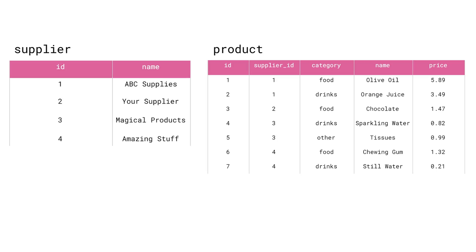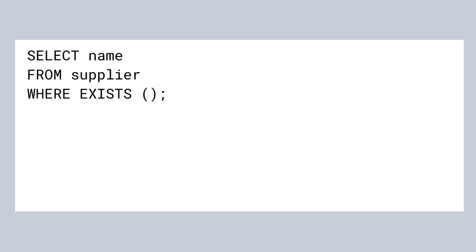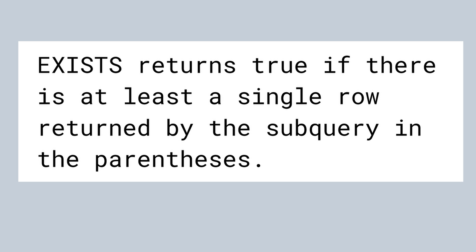Now let's think about the following problem. We want to find the names of all suppliers who supply at least a single product from the food category. There are a few ways of solving this task in SQL, and we are going to show you how you can solve it with a new operator: EXISTS. Let's create a sort of template of our query — you can see it on the screen now: SELECT name FROM supplier. Note what happens in the WHERE clause: we add a new keyword named EXISTS followed by a pair of parentheses. EXISTS returns true if there is at least a single row returned by the subquery in the parentheses.